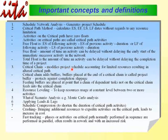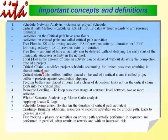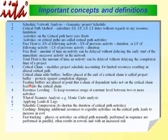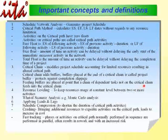Critical Chain modifies the project schedule accounting for limited resources, often resulting in an altered Critical Path. Critical Buffers placed at the end of a critical chain are called Project Buffers, and they protect against completion slippage. Feeding Buffers are placed at the point where a chain of dependent tasks not on the critical chain feeds into the critical chain.